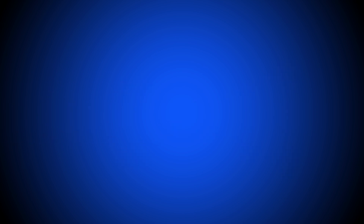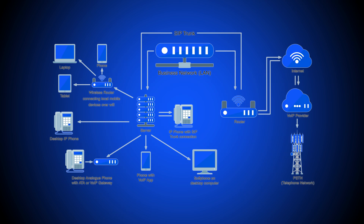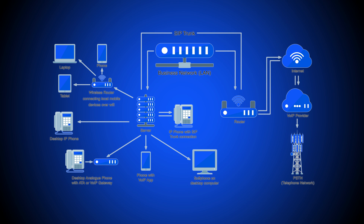With cloud-hosted VoIP and UCaaS, your virtual phone provider handles the SIP trunking needed to receive all incoming calls, whether via PSTN or VoIP. Your provider then virtually routes these calls to the appropriate DID number.